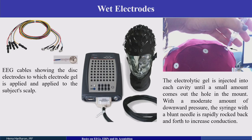In dry electrodes there is no gel; in wet electrodes we use gel. The NeuroScan cap uses a sponge or gel inserted into each electrode to create contact. It is like a blunt needle or syringe-type insertion that increases the conduction between the recording system and the scalp.